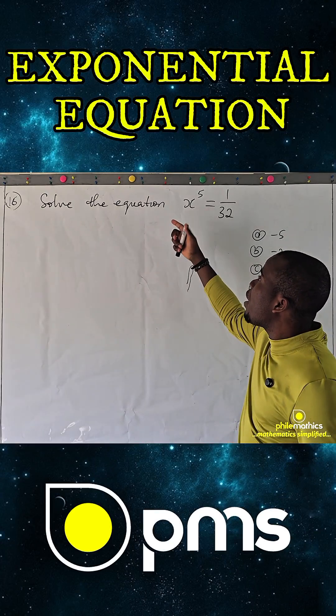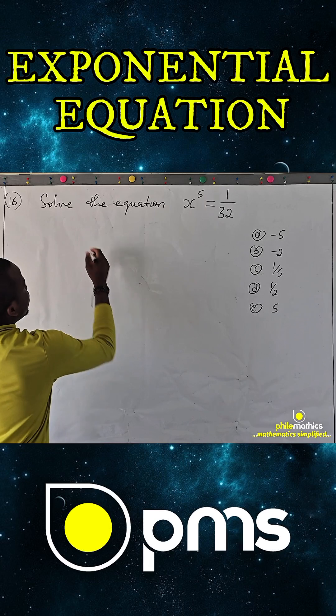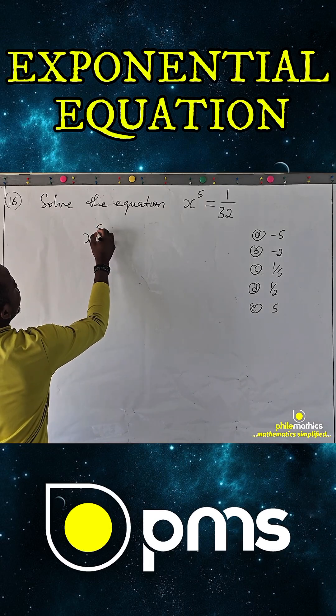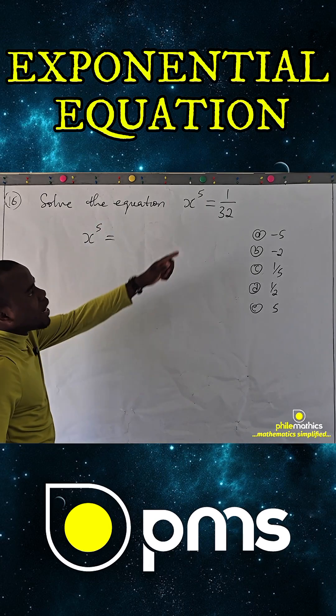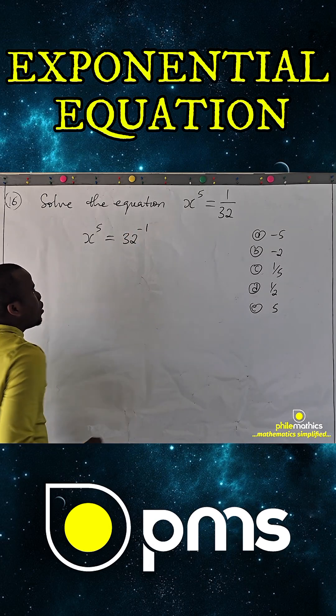Solve the equation x to power 5 equals 1 over 32. So what we simply do here: x to power 5, we can always write 1 over 32 as 32 to power minus 1 from the laws of indices.